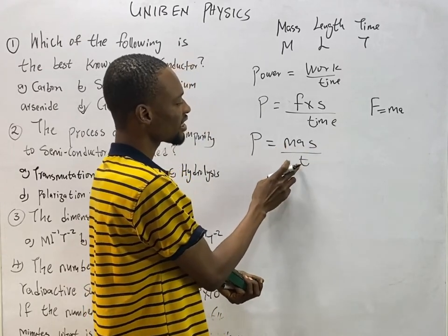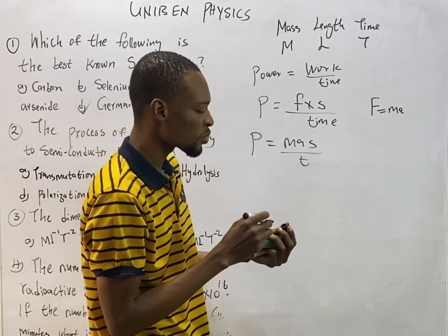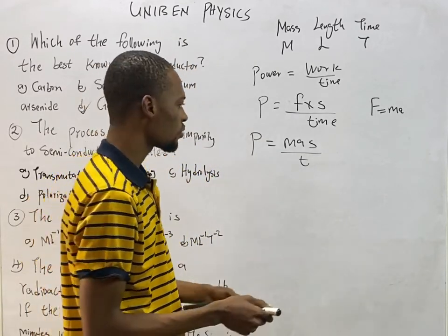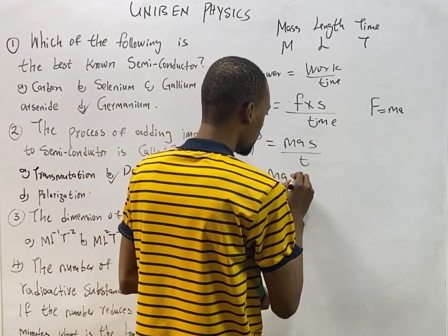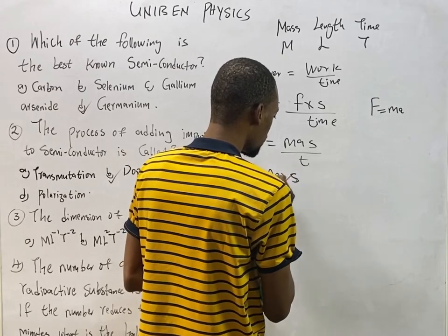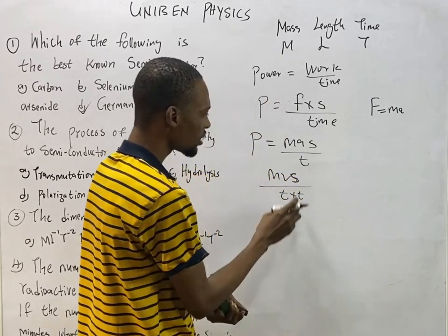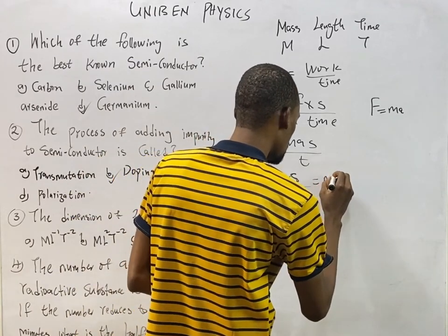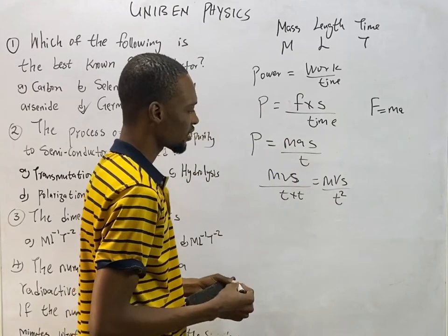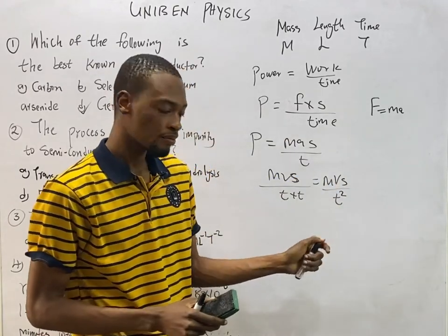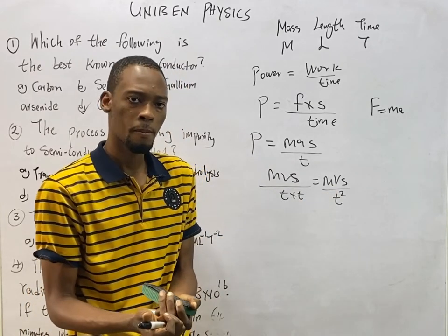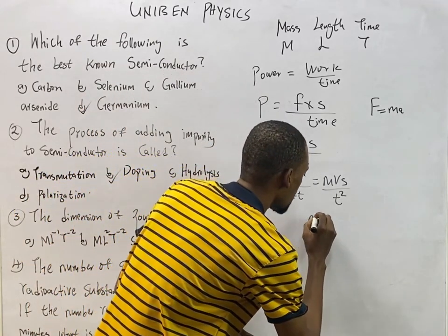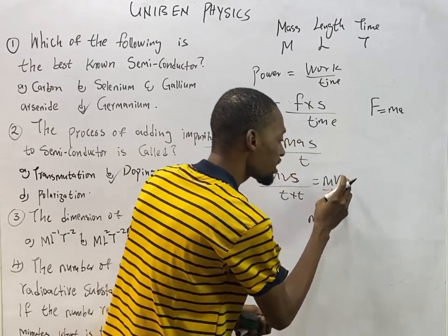Mass, time, and distance are fundamental. Acceleration is a derived quantity — acceleration equals velocity over time, giving us m·v·s over t². Velocity itself is a derived quantity: velocity equals displacement over time, so we substitute to get m·(s/t)·s over t², which is m·s² over t³.